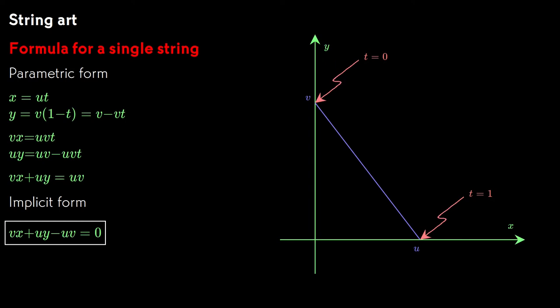we get a simple equation that relates x and y with no parameter t and no unexpected problems with division by 0 if either u or v is 0.